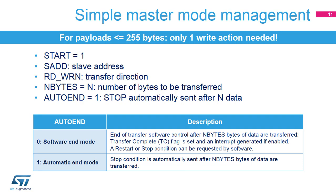Master mode software management is very simple. Only one write action is needed to handle a master transfer with a payload smaller than 255 bytes. The full protocol is managed by the hardware. To start a transfer in master mode, I2C control register 2 must be written with the start condition request, the slave address, the transfer direction, the number of bytes to be transferred, and the end of transfer mode. End of transfer mode is configured by the auto-end bit. If it is set, the stop condition is automatically sent after the programmed number of bytes is transferred.